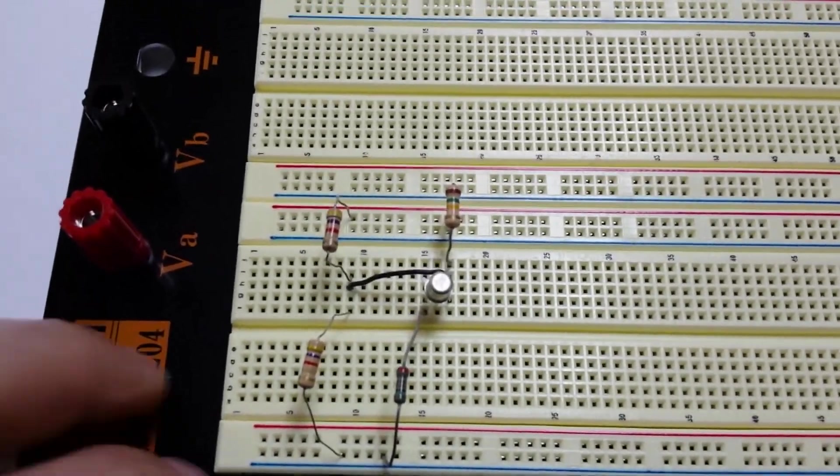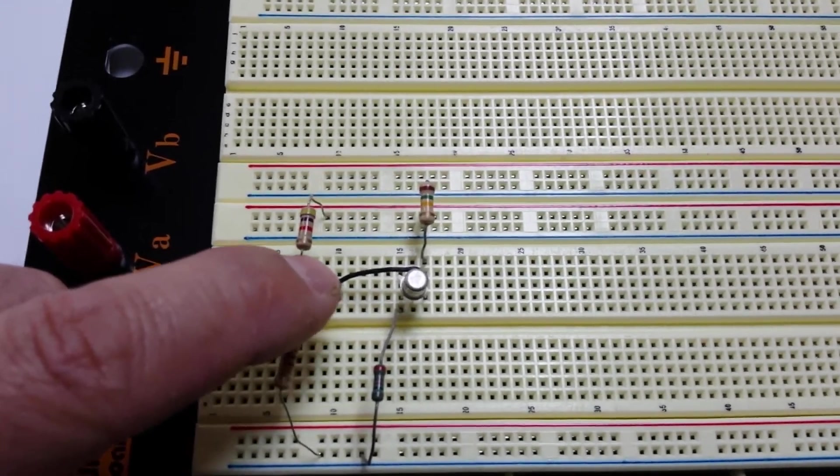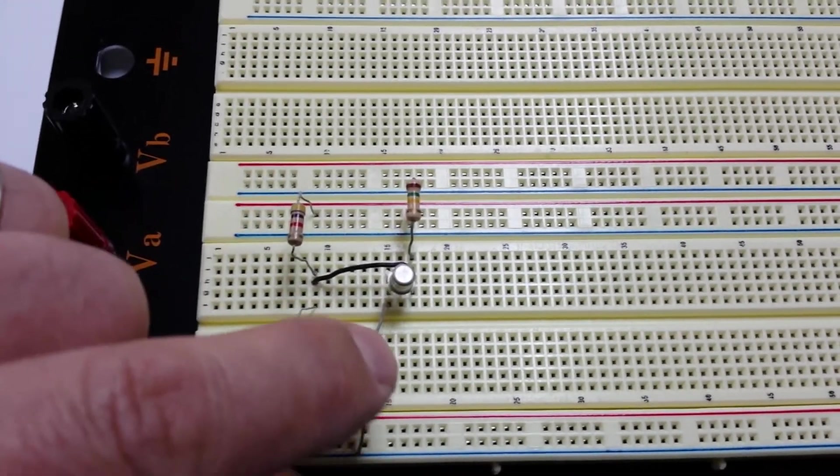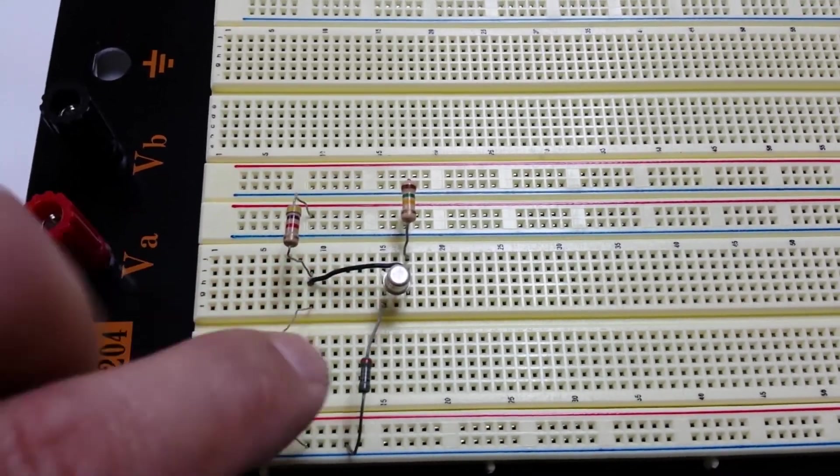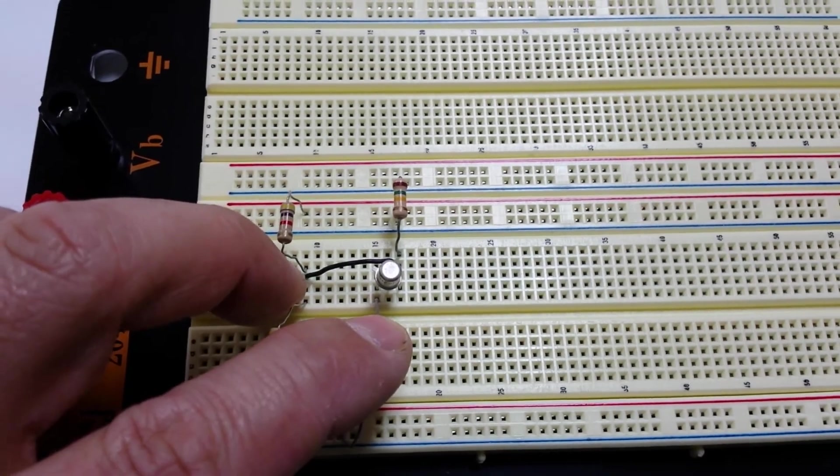VBE would be base-to-emitter. So my base, this wire here is going to my base, so I can put my lead on this resistor or that resistor, anywhere here, and my emitter is right here. So between this point and that point there.